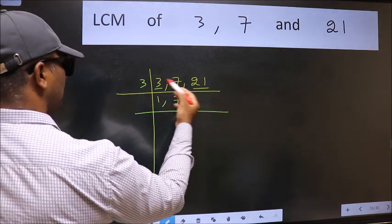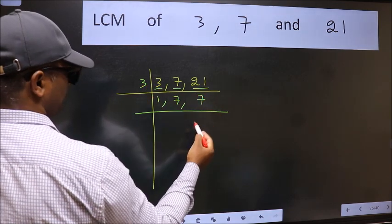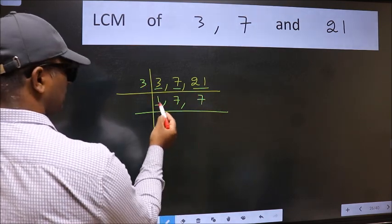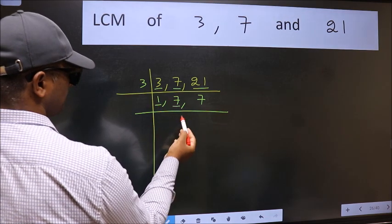The other number 21. When do we get 21 in the 3 table? 3 times 7 is 21. Now we got 1 here. So focus on the next number 7.